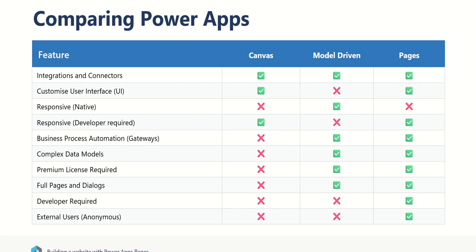So we talked about a couple of different types of PowerApps. PowerApps Pages are one of three types of PowerApps — we also talked about Canvas PowerApps and model-driven PowerApps. There are different features and different reasons why you might use a PowerApps Page over a model-driven app or a Canvas app. Let's just have a quick run through them. So: integrations and connectors — meaning integrating to third-party platforms, pulling and pushing data — that can be achieved on all three types of PowerApps, so we're not too concerned by that.